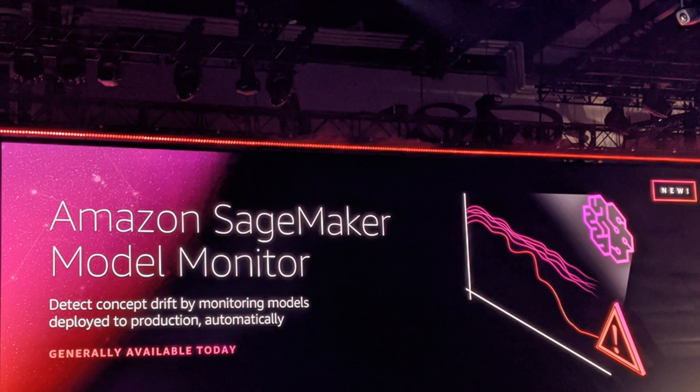It includes everything a data scientist would need to get started with, including ways to organize notebooks, data sets, code, and models, for example. It essentially wants to be a one-stop shop for all the machine learning tools and results you need to get started. At the core of Studio is also the ability to share projects and folders with others working on the same project, including the ability to discuss notebooks and results.